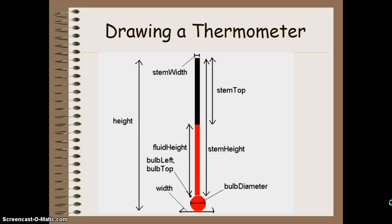To draw a thermometer, I'll quickly go over how this is going to look. These are the different parts of the thermometer. We've got the bulb, has a diameter, and a starting point in the top left corner, which is bulb left and bulb top. We have our stem, which has a width and a stem height, and it also will have a top and left corner. And then we've got the fluid, which is the fluid height here, and then the stem top is whatever part is not filled by the fluid.